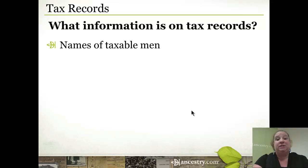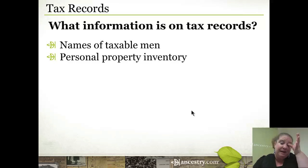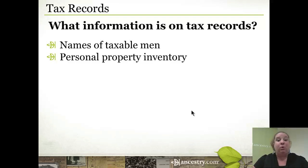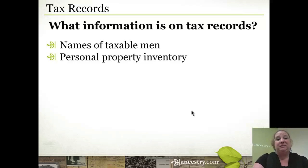Now let's talk about what kind of information is included on tax records. Usually they're just a list of names, and that may feel like it's not really valuable — but hopefully I've already shared enough that you know there's real value in these records. Sometimes they also include what's called a personal property inventory. Depending on the kind of tax being levied, that determines what information is recorded. It depends on the time period, the laws in effect at the time and place, and then what survived.